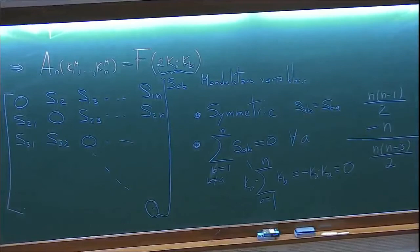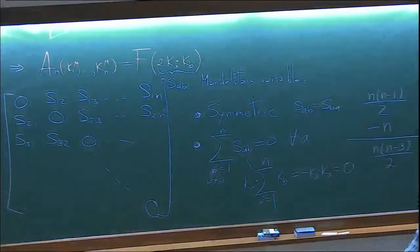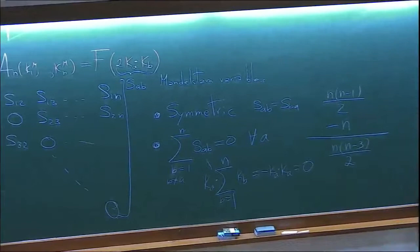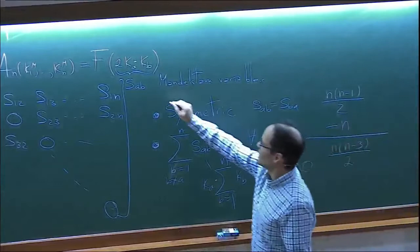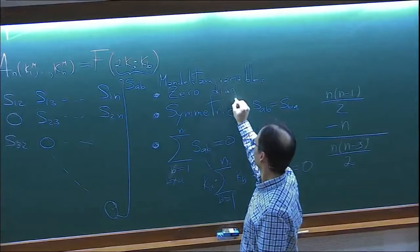The diagonal elements are zero — so although it's symmetric, it also has zero diagonals. That is precisely the number of components of an anti-symmetric matrix, and it's true. However, this counting is only valid if the dimension of spacetime is greater than or equal to N minus 1. The reason is there will be additional Gram determinant constraints.